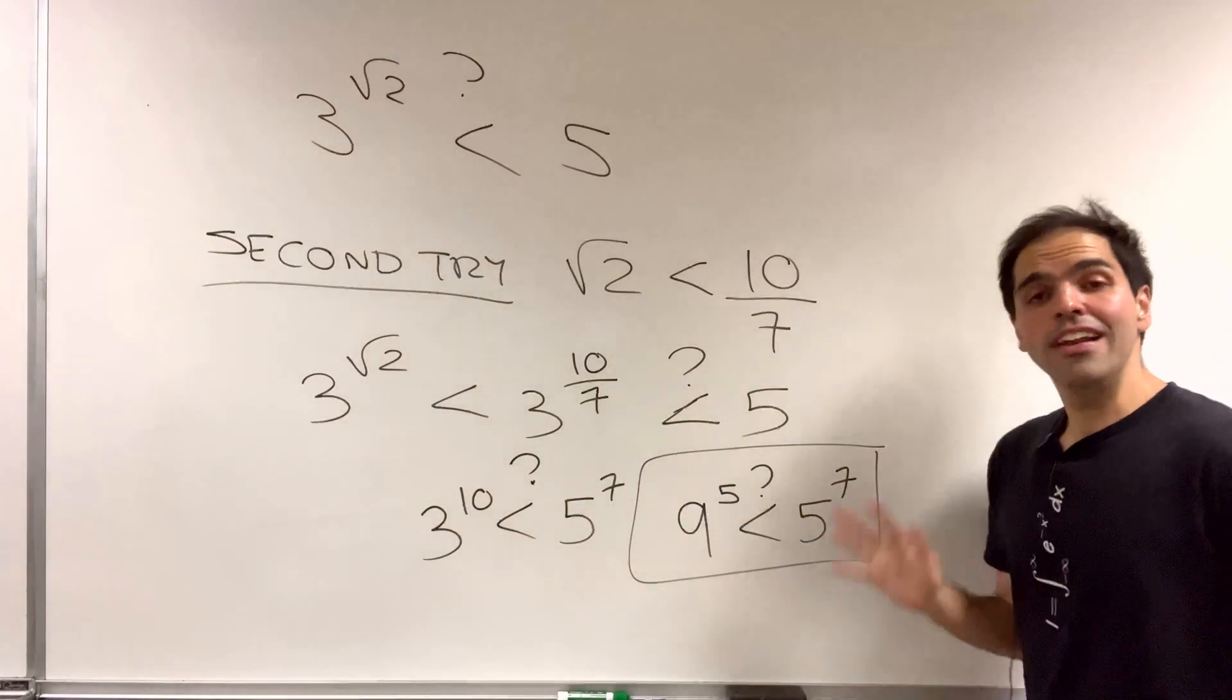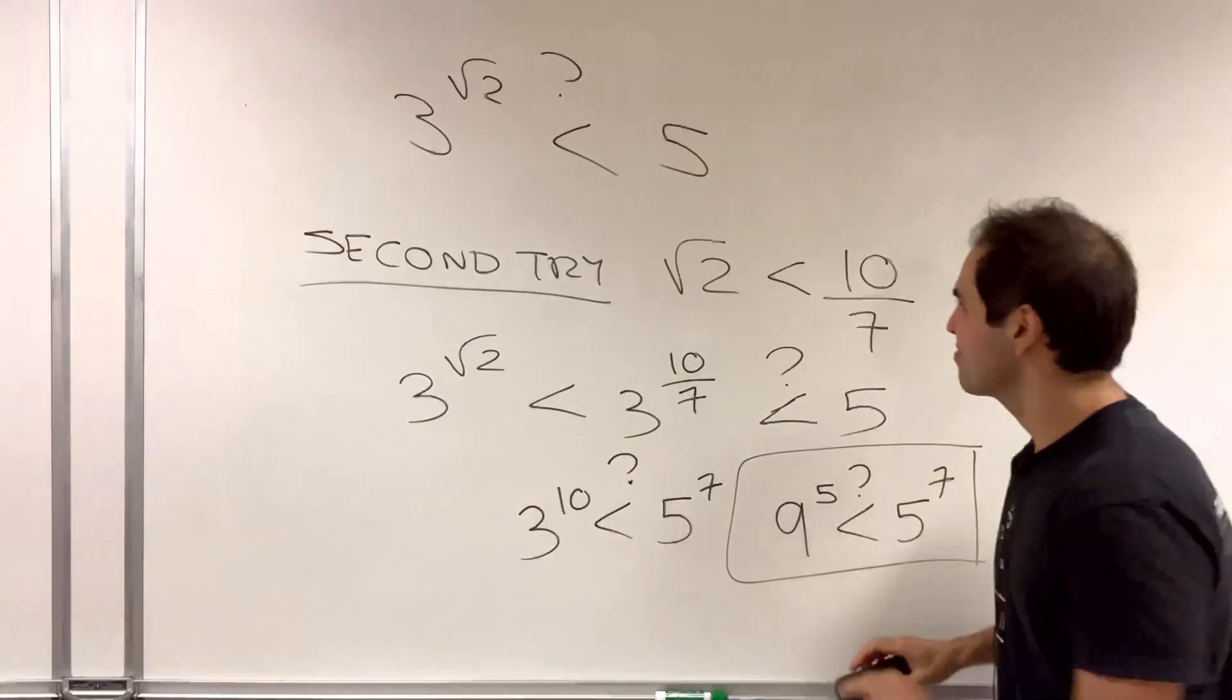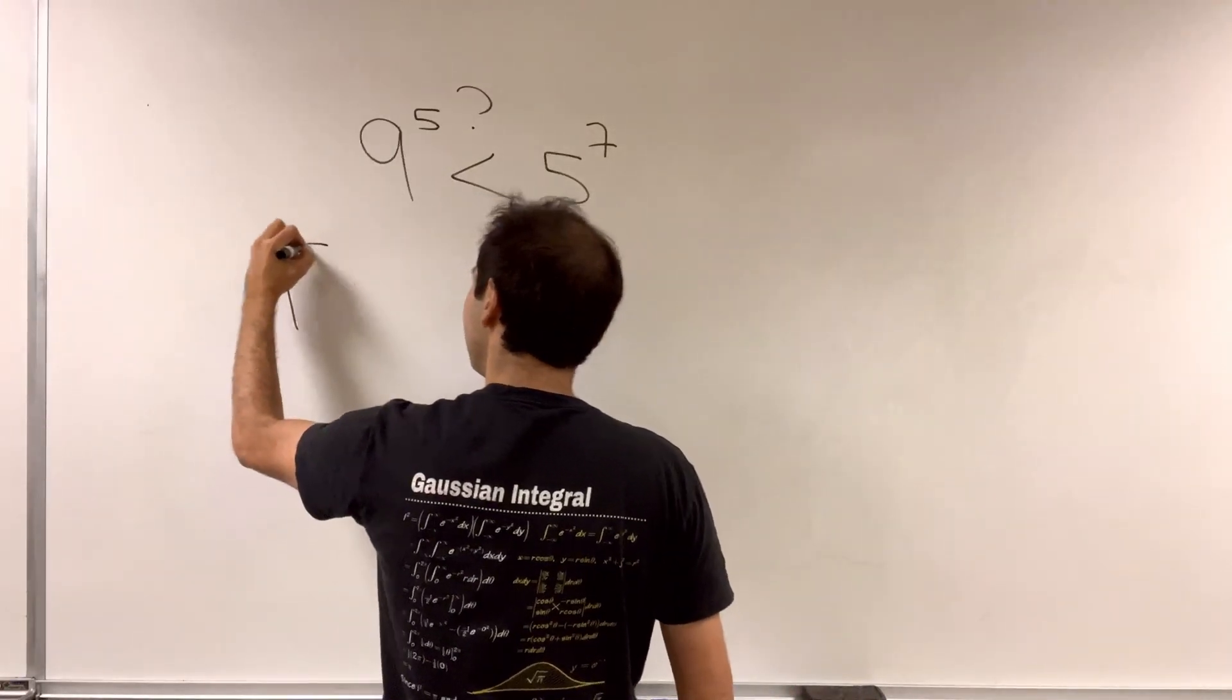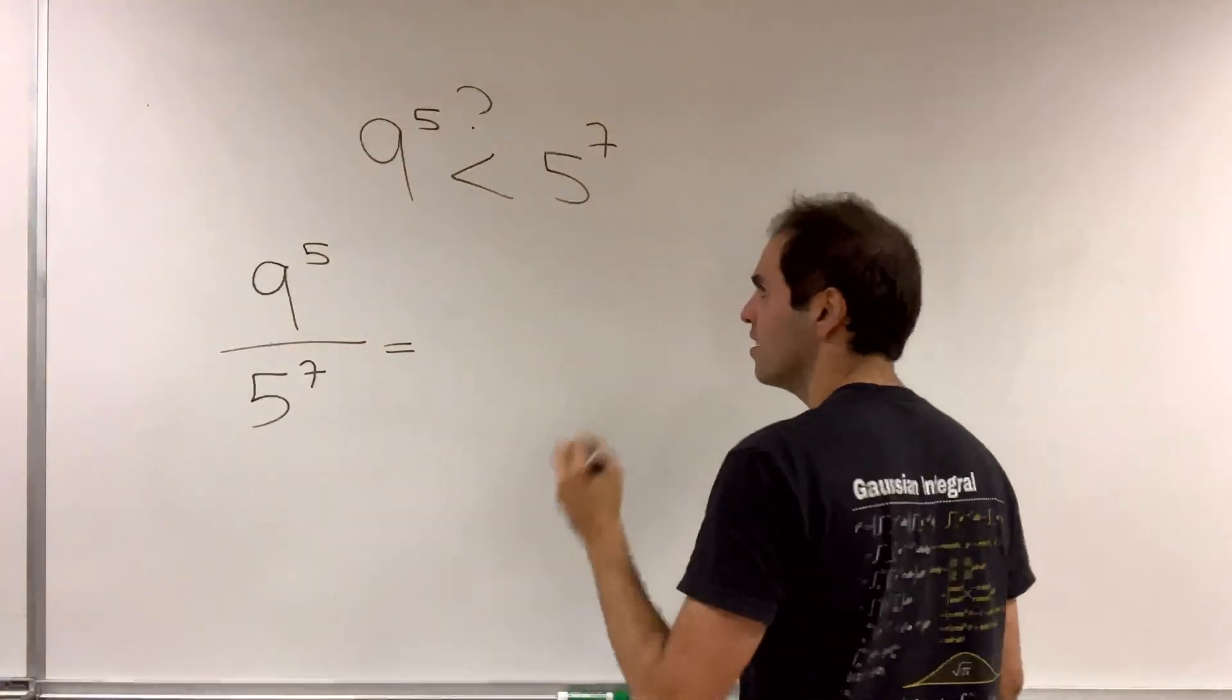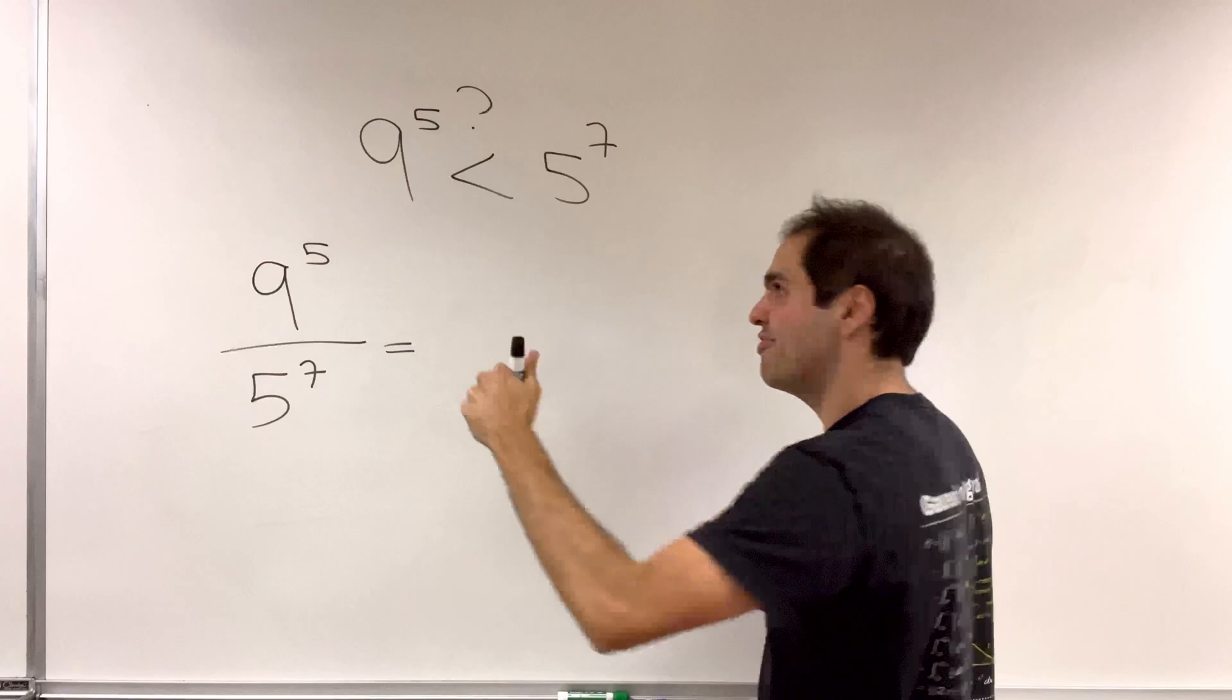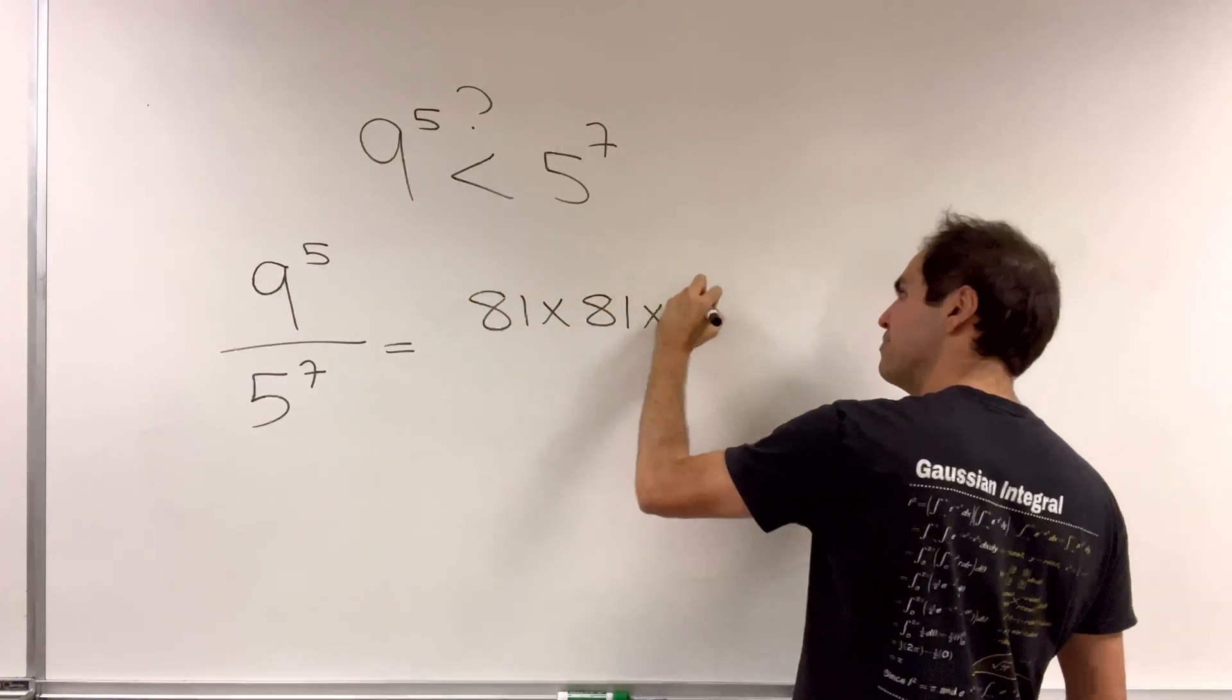And now, let's try to figure out this much easier question. And in order to do this, let's consider the ratio. So 9 to the 5th over 5 to the 7th? Well, what this is, it's 9 five times. So 81 times 81 times 81 times 9.